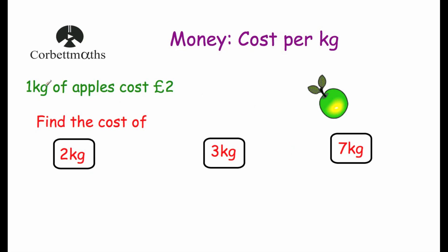If we're told that one kilogram costs two pounds, two kilograms would be two lots of two pounds. So we do two times two pounds, which gives us four pounds. We find that by just multiplying the cost — the two pounds — by the number of kilograms we wanted.